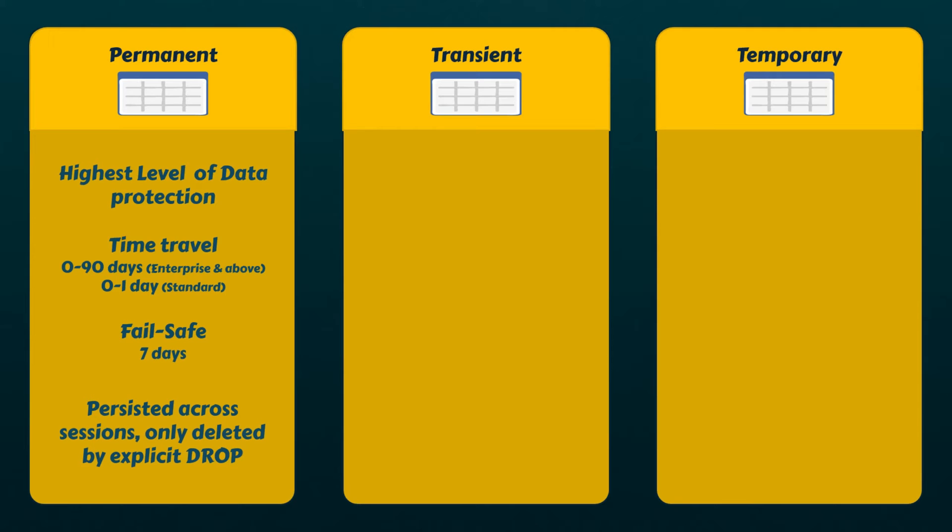In contrast, temporary tables offer the lowest level of data protection and persistence. These tables exist only within the session in which they were created, and persist only for the duration of that session, which means they are not visible to other users or sessions. Once the session ends, data stored in the temporary table is purged completely from the system and is not recoverable.